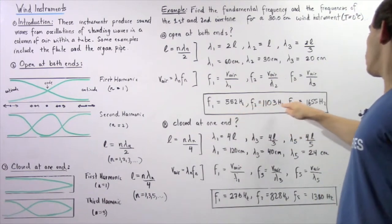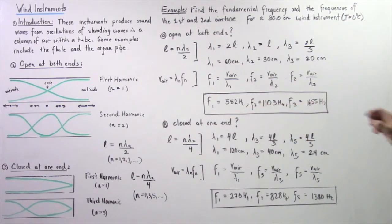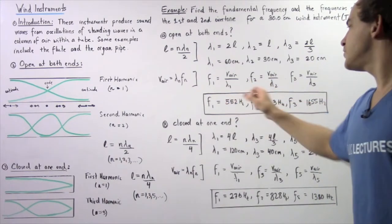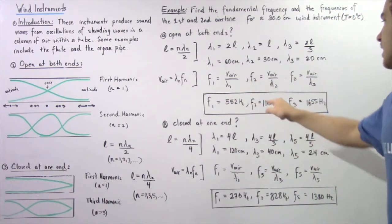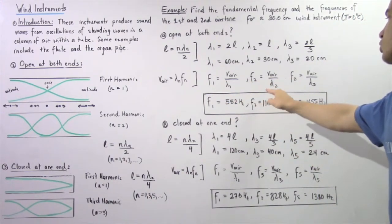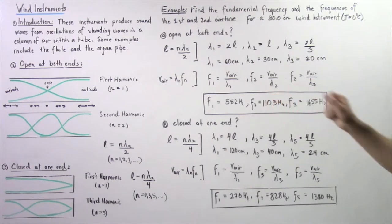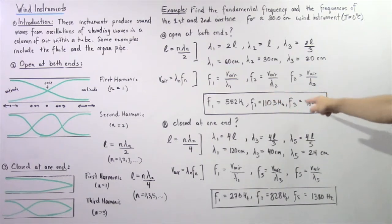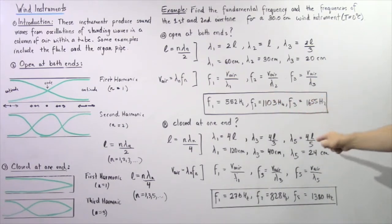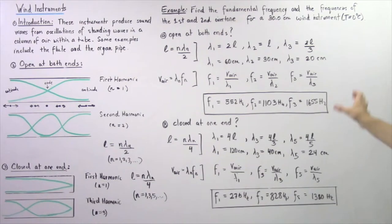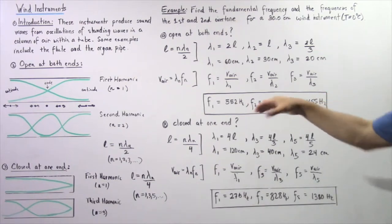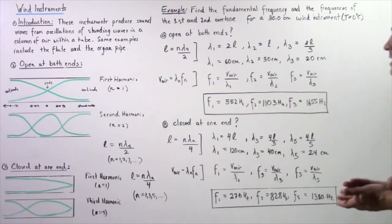Applying the velocity equation, the fundamental frequency is 552 Hz, the frequency of the first overtone is 1103 Hz, and the frequency of the second overtone is 1655 Hz.